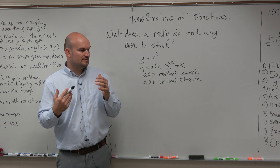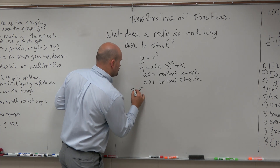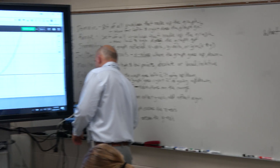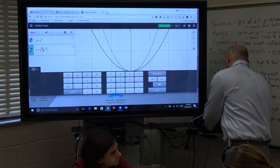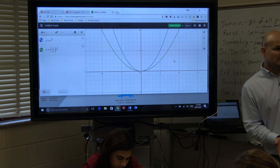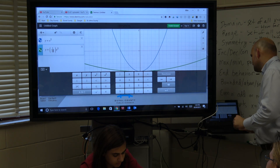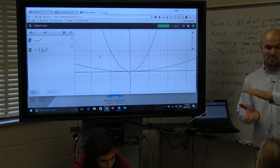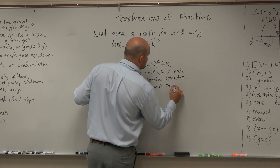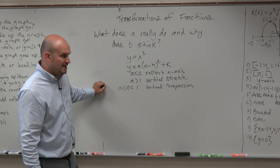Now, what about the values we haven't talked about? What about when 'a' is greater than 0 but less than 1? That would basically be a fraction, like 1/2. What happens when we bring it down to 1/2? It gets wider — and actually the term we use is it compresses the graph. What about 1/20? The smaller the number, the more it's being compressed. So when 'a' is between 0 and 1, we call this a vertical compression. So that's vertical stretch and vertical compression.